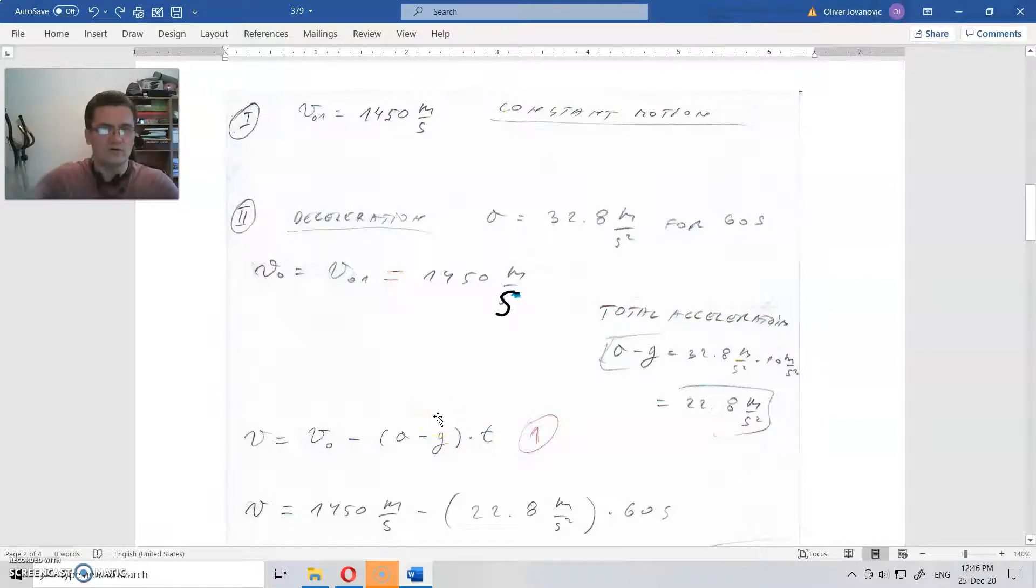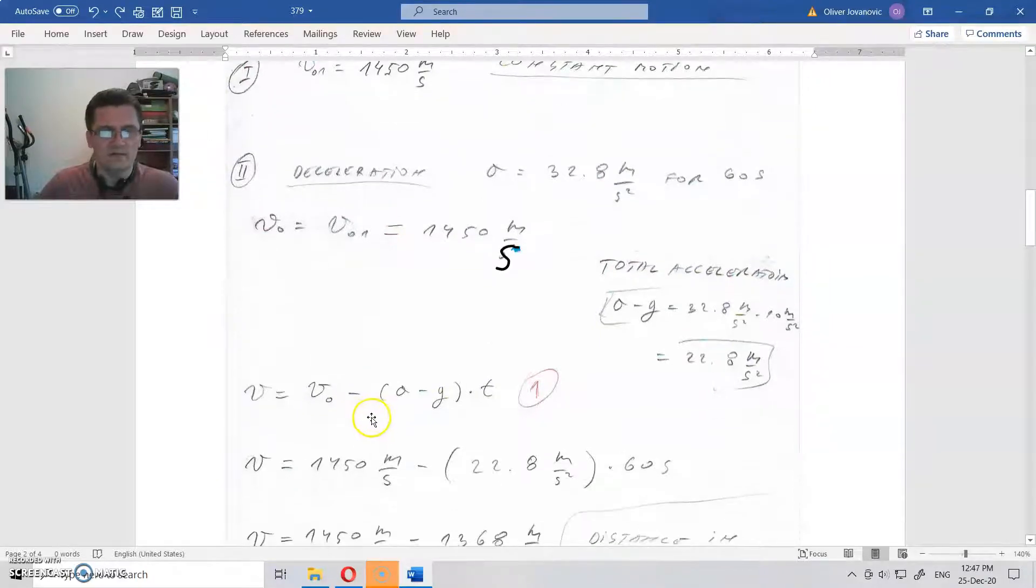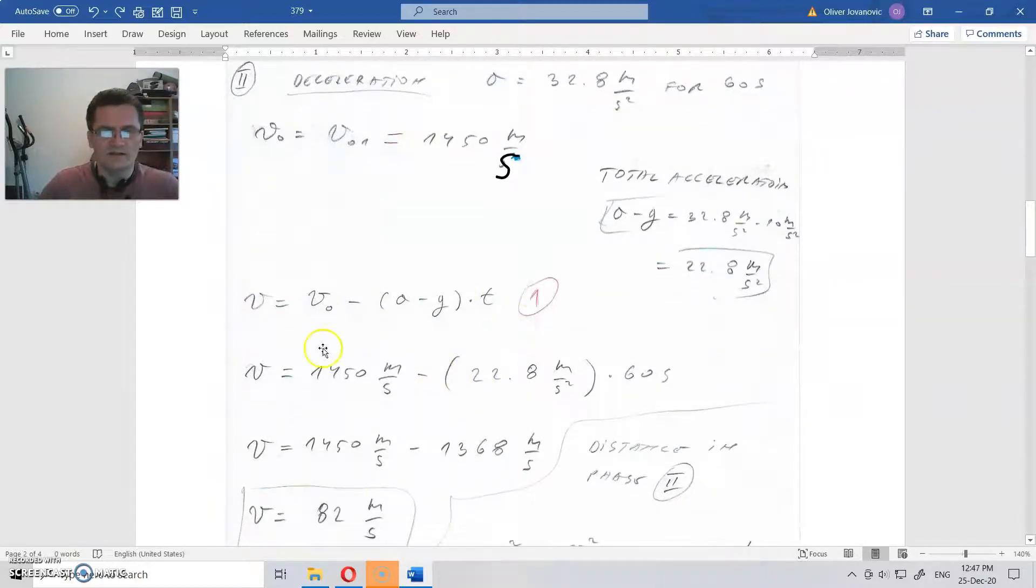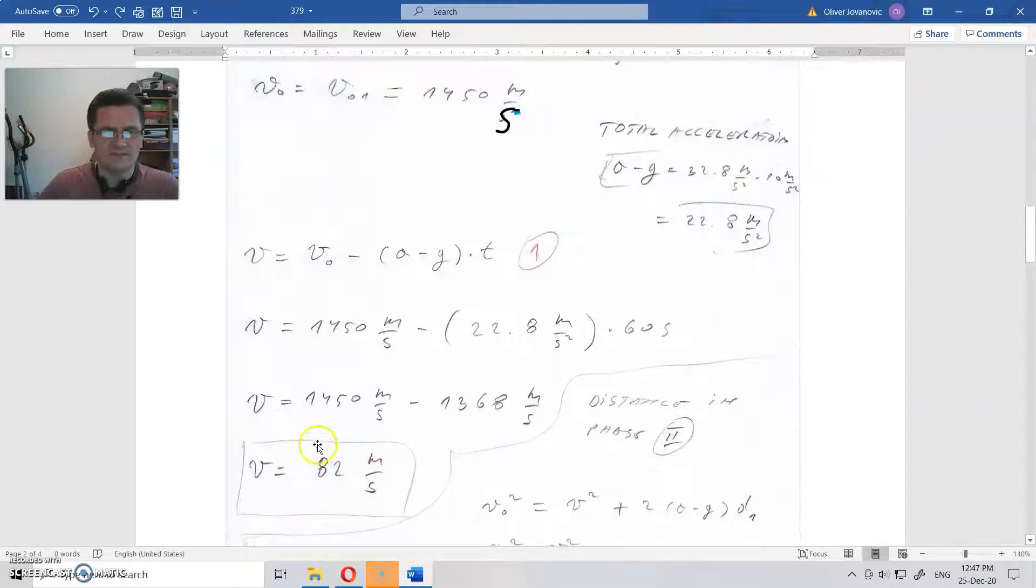Momentum is downward and overall acceleration is upward, so there is a minus here because of that. In other words, speed will get reduced smaller and smaller. This is how you calculate that, and that speed was 82 meters per second.